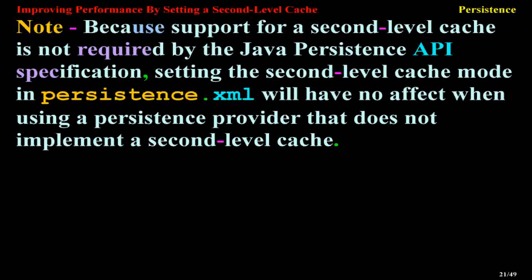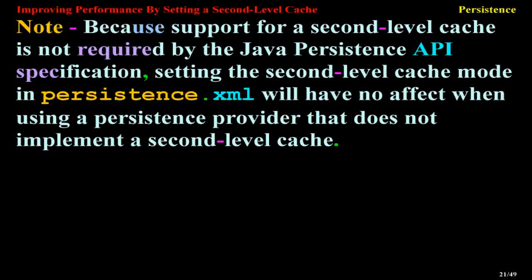Note: Because support for a second-level cache is not required by the Java Persistence API specification, setting the second-level cache mode in persistence.xml will have no effect when using a Persistence Provider that does not implement a second-level cache.